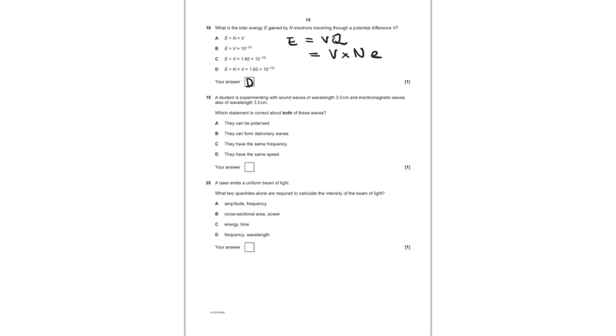For question number 19, a student is experimenting with sound waves of wavelength three centimeters and EM waves with a wavelength of three centimeters as well. Which statement is correct about both of these waves? They can be polarized? No, they can't. Sound waves can't be because they are longitudinal. They can form stationary waves? Yes, they can. So B is our answer.